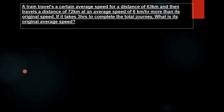It is given that the train travels at an average speed for the first 63 km. Then it increases its speed by 6 km per hour and travels the next 72 km. It is also given that it takes 3 hours to complete the entire journey. We have to find the train's original average speed, that is, before it increases by 6 km per hour.